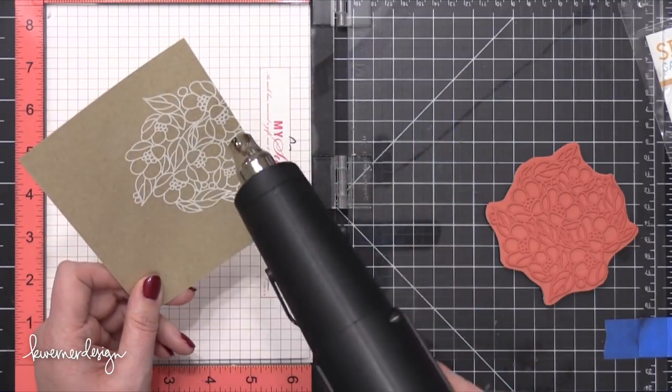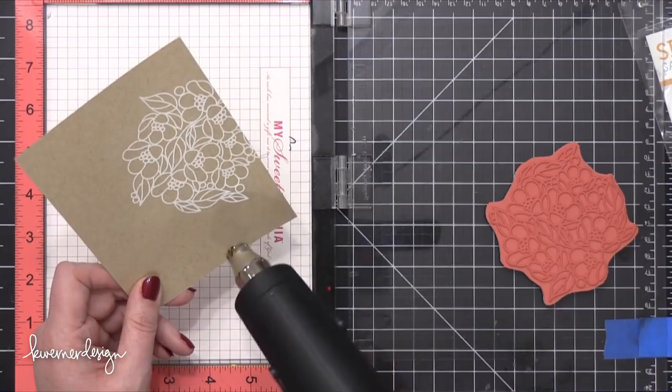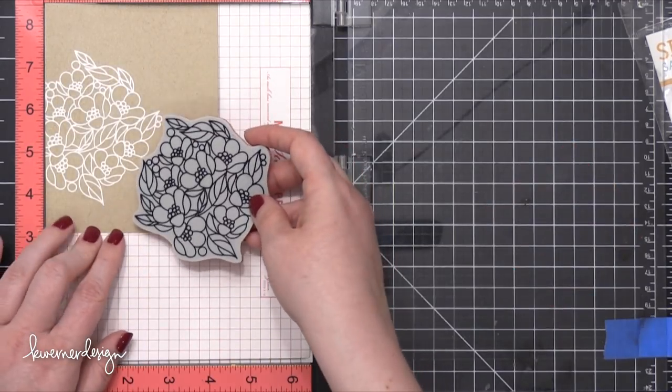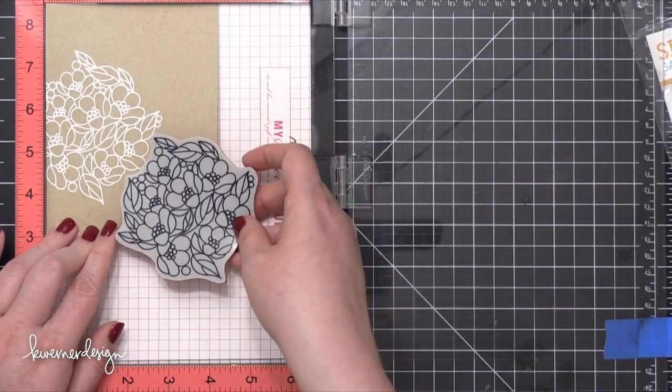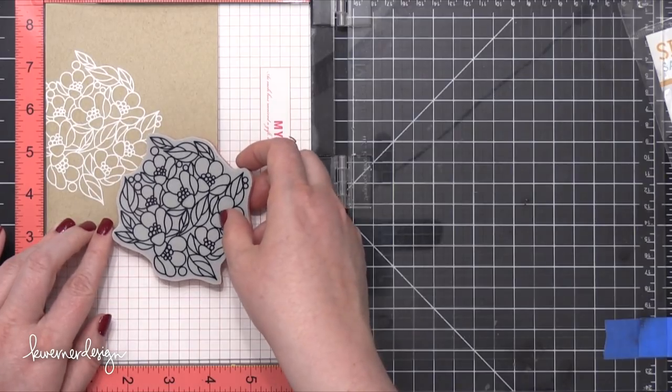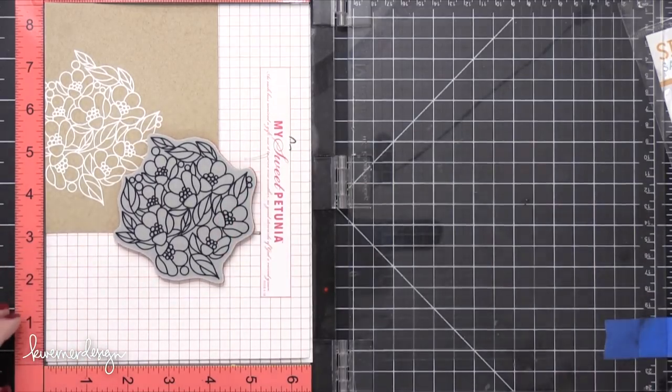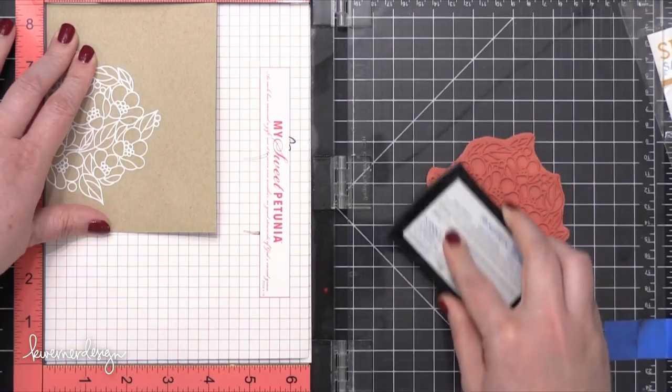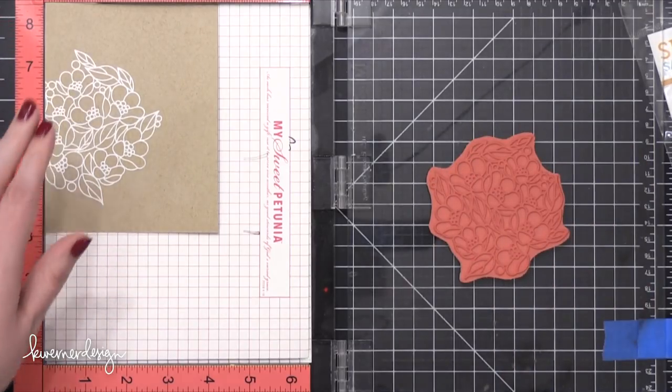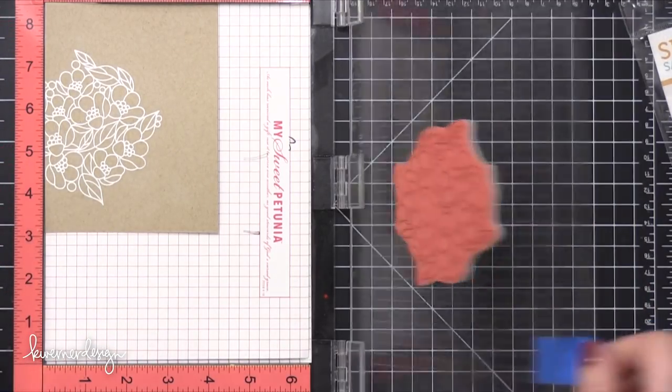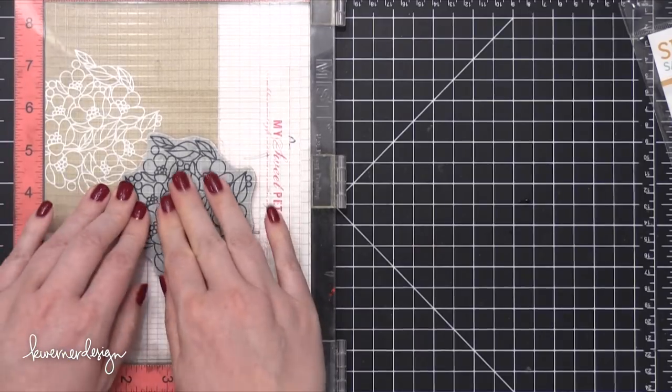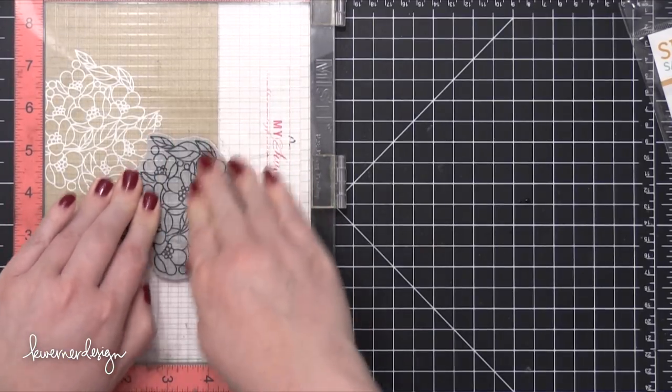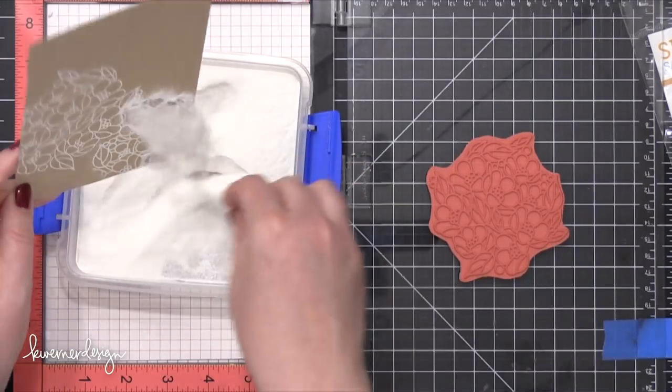I first prepped the area with an anti-static powder tool and then I stamped it in VersaMark ink and then coated the stamped image in alabaster embossing powder from Brutus Monroe, which is a nice white embossing powder. Then heat set that with a heat tool and then I was able to move on and stamp this image again using those same exact steps.